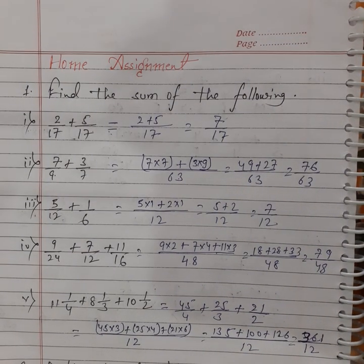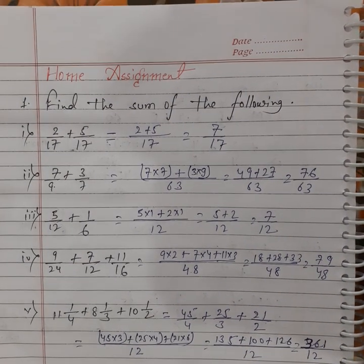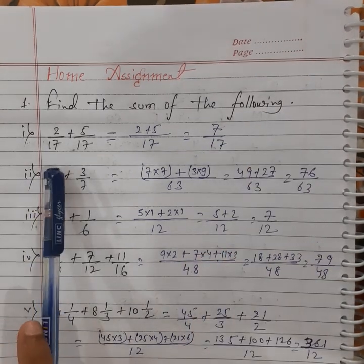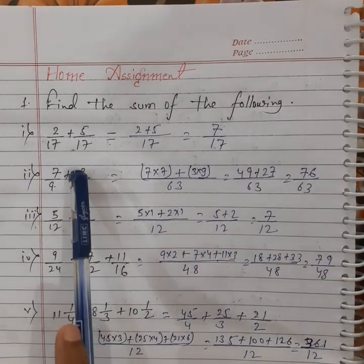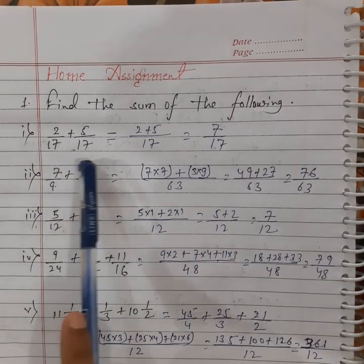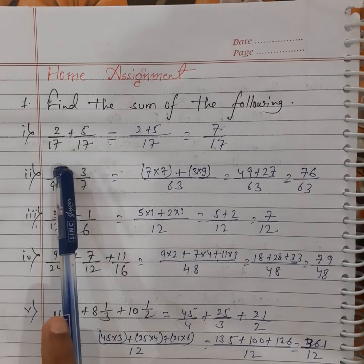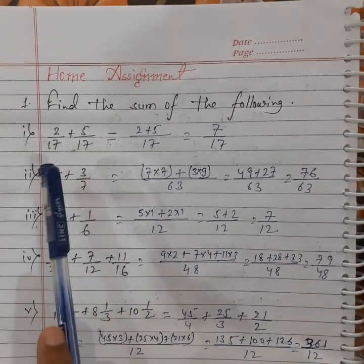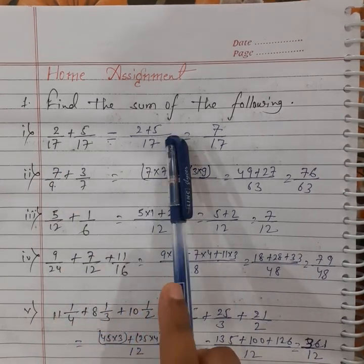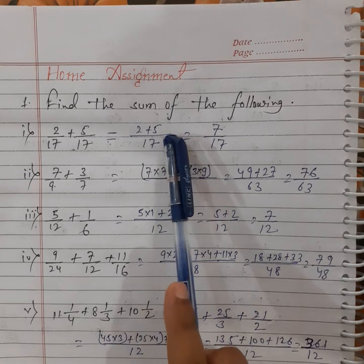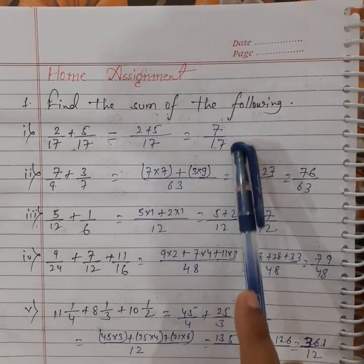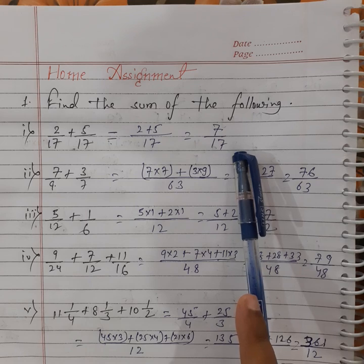The first question is: find the sum of the following — 2 by 17 plus 5 by 17. The denominators are the same, so these are like fractions. We add the numerators: 2 plus 5, over the common denominator 17. We get 7 by 17.